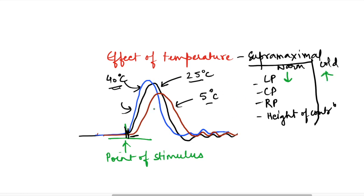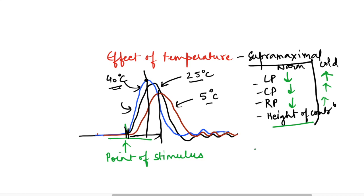The contraction period similarly decreases in warm temperature and increases in cold temperature. The same pattern applies to the relaxation period: decreased in warm and increased in cold. As for the height of contraction, it has increased in warm temperature and decreased in cold temperature. These are straightforward observations from the graph.